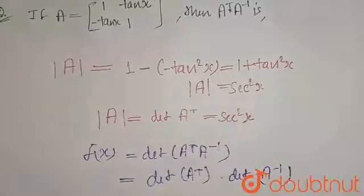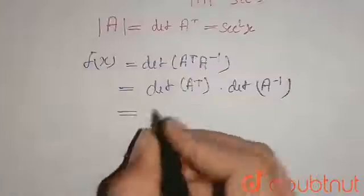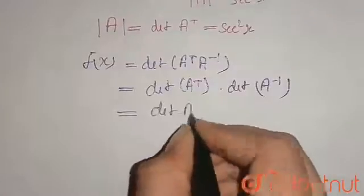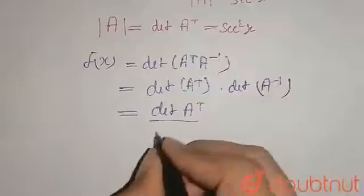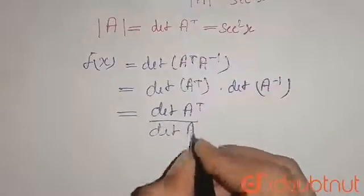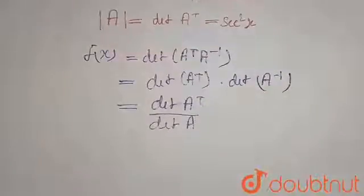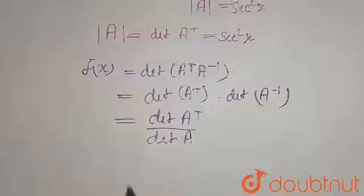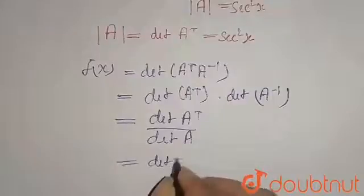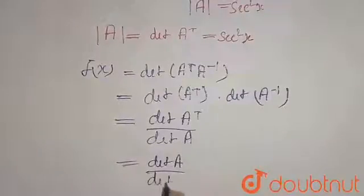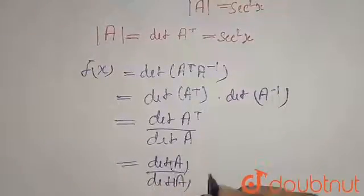So here what I will get is determinant of A transpose, and this will be inverse so it will go down, so you will get determinant of A in denominator. Now determinant of A transpose is basically equals to determinant of A only. So here I will write determinant of A upon determinant of A, that will be equals to 1.